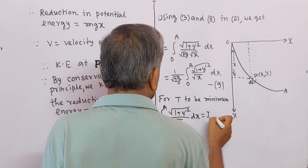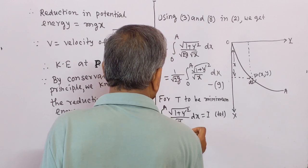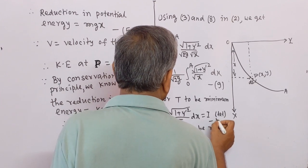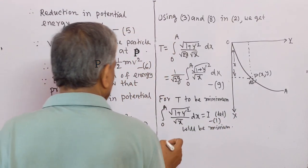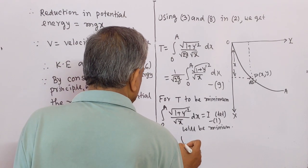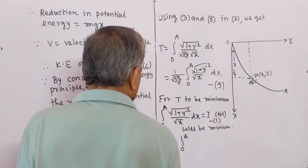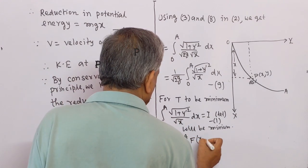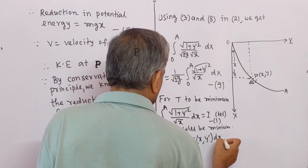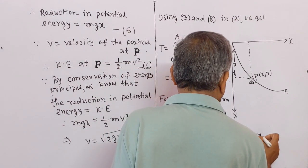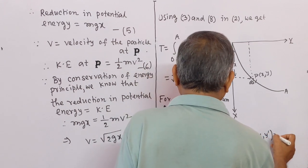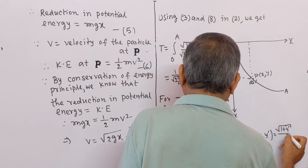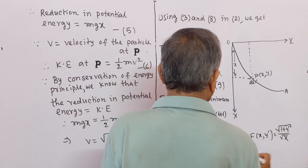Let this be equation number 10. Therefore I equals the integration from O to A of F(x, y') dx, where the variables present are x and y'. Here F(x, y') = √(1 + y'²) / √x. Let this be equation number 11.